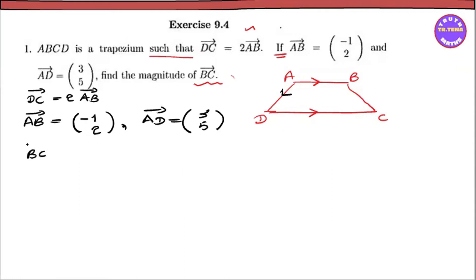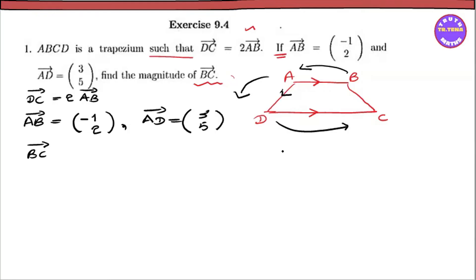Now the BC vector is equal to 3. To find BC, we use the polygon law: BC vector equals BA vector plus AD vector plus DC vector.